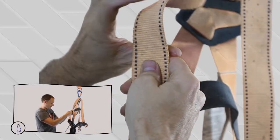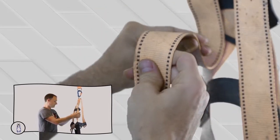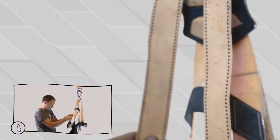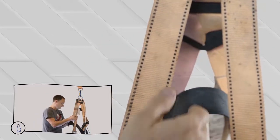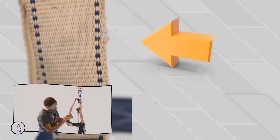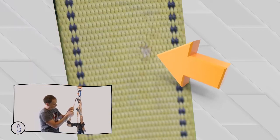You want to look for cuts, nicks, any type of discoloration, broken stitching, damaged webbing, all sorts of damage that could potentially happen. You can see here there's like a cut in the side and a nick. There's some abrasion right here that's damaged the webbing.